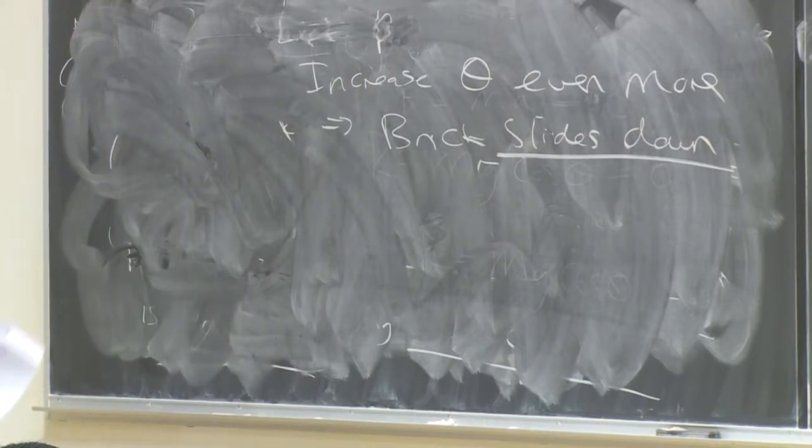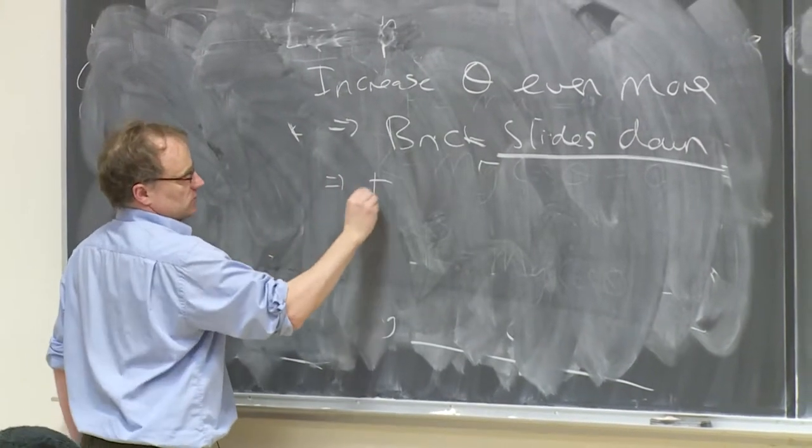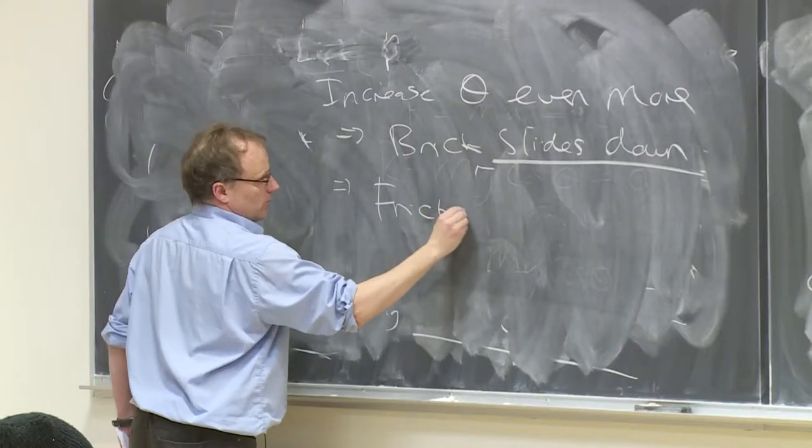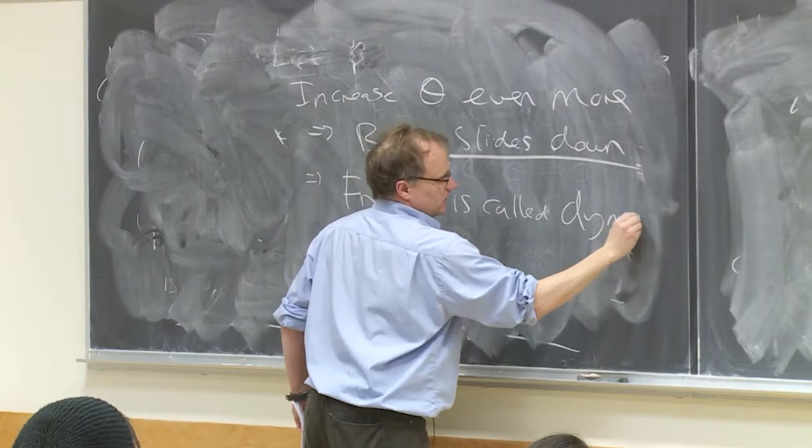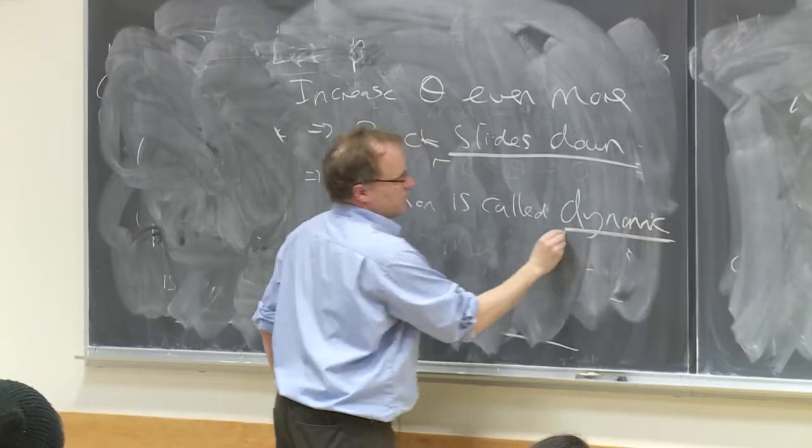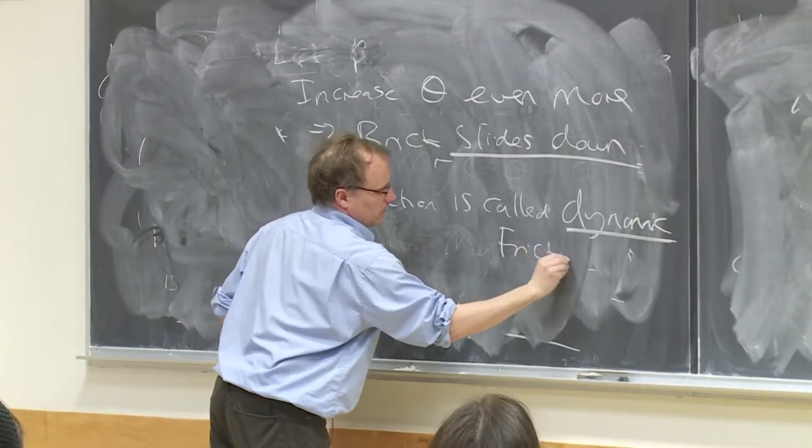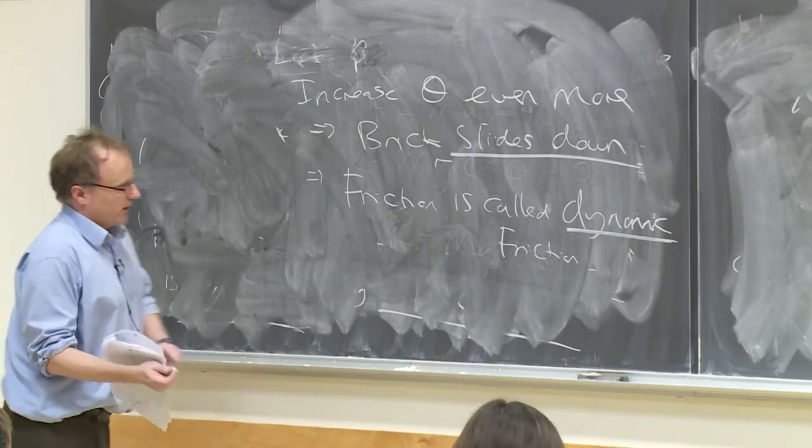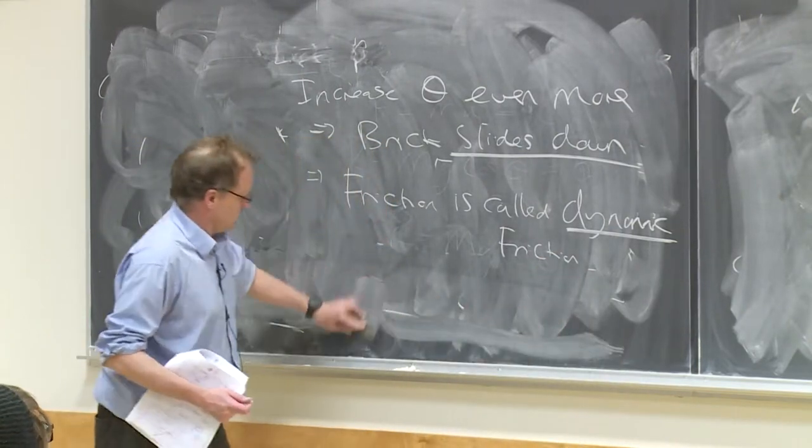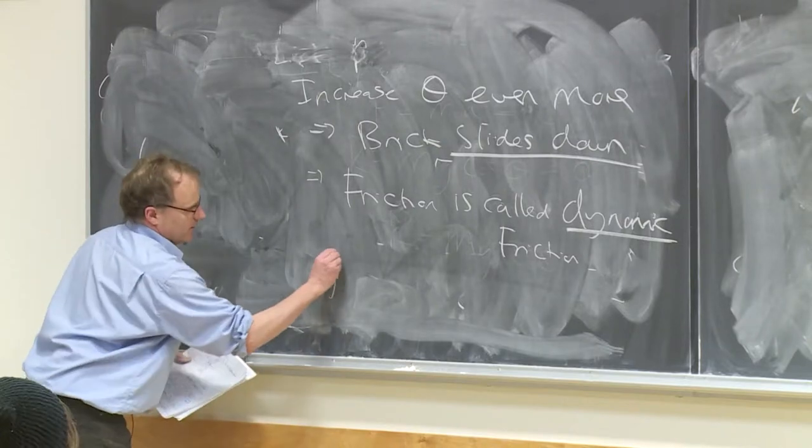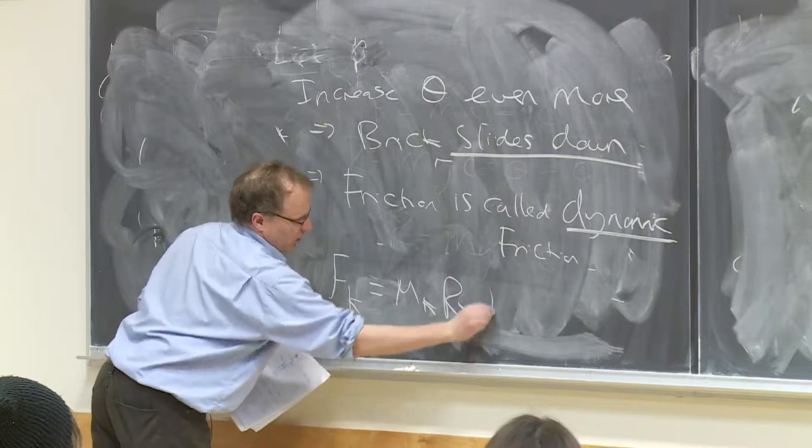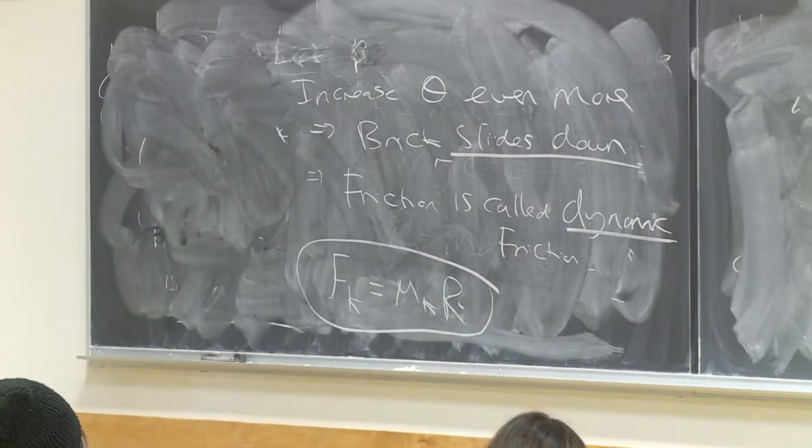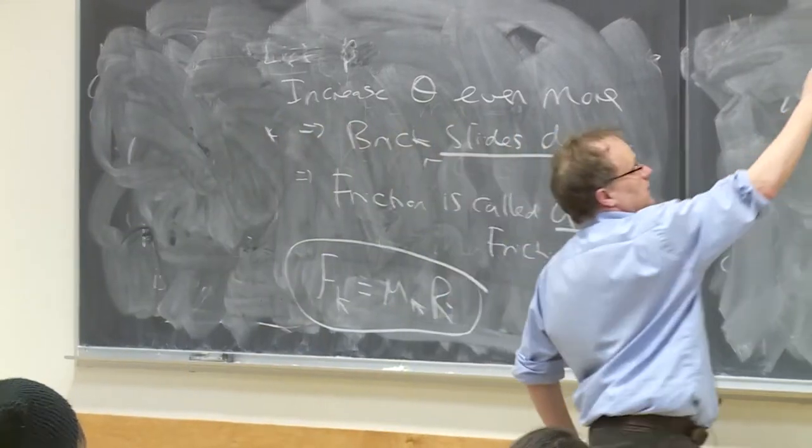And in this case, we have dynamic friction. This friction is called dynamic because it's moving. And in this case, we would have Fk equals mu k multiplied by R, where mu k is the coefficient of dynamic friction. So I can put that up here.